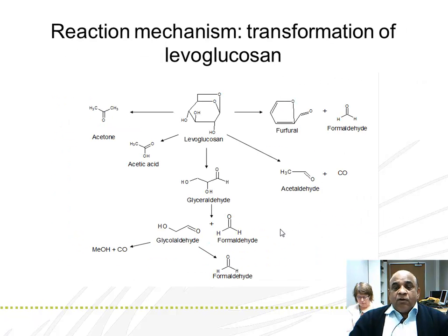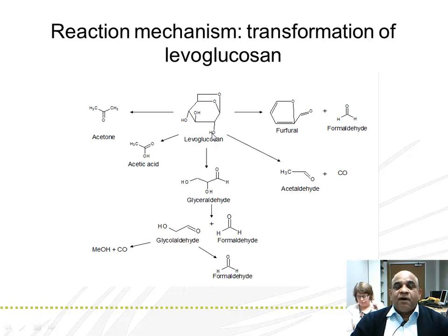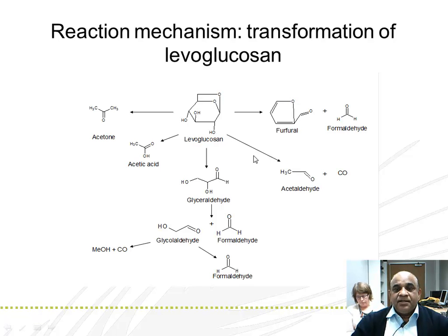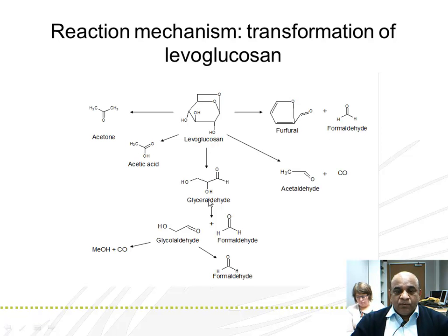When we go into the details of the reaction mechanism of transformation of levoglucosan, we find that levoglucosan can directly be converted to acetaldehyde. It also forms furfural and formaldehyde.